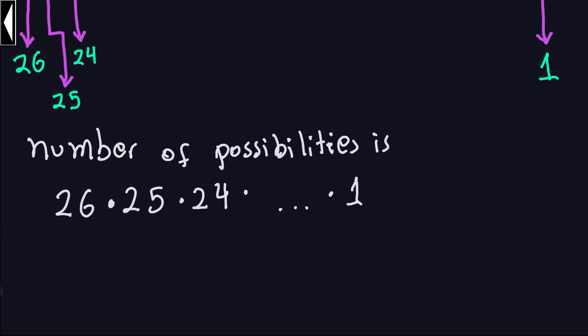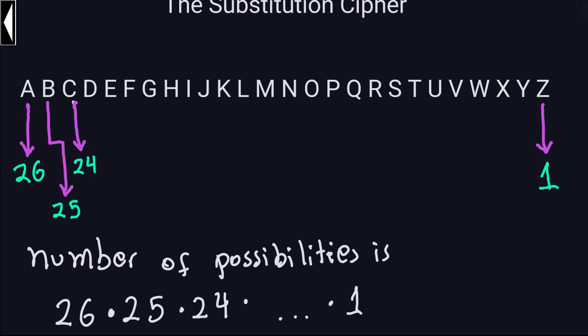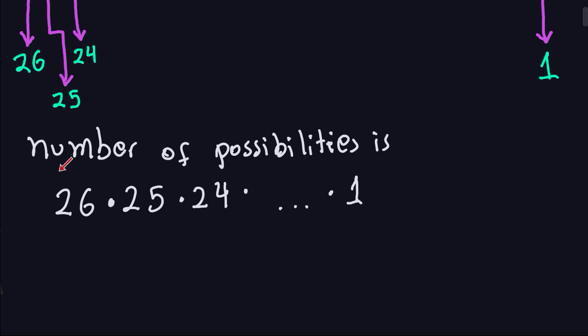Now, if your alphabet has more letters — for example, if you include lowercase — then you would have 52 letters, so the first letter could have 52 possibilities, the second 51, and so on. It all depends on the number of symbols or letters in your alphabet. Because we have 26, we have the product 26 × 25 × 24 and so on.